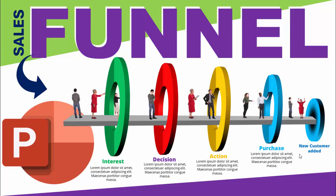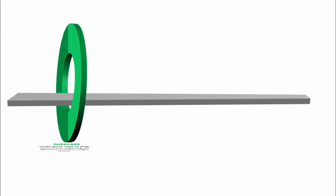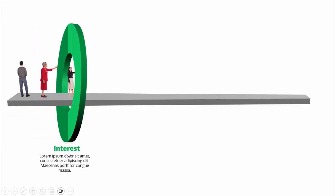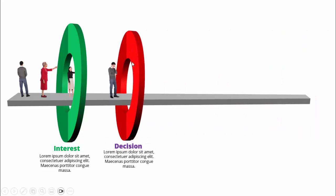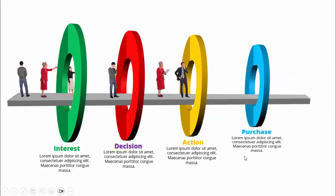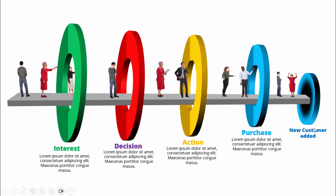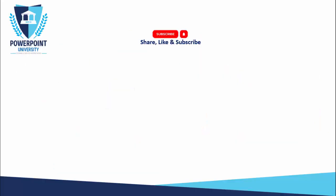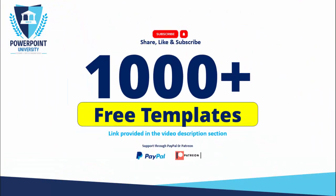In today's tutorial I'm going to show you how to create a sales funnel diagram in PowerPoint. This is how the slide works: when I click, the ramp or platform comes, then the first option comes where I've added 'Interest' with some detailed text and a few consumer icons. When I click, with a different color combination, the second option comes — 'Decision' — then the third option 'Action', the fourth 'Purchase', and then a new customer appears. Please share, like, and subscribe to my channel, the only YouTube channel for PowerPoint where you can get 1000+ free templates absolutely free, with links in the video description.